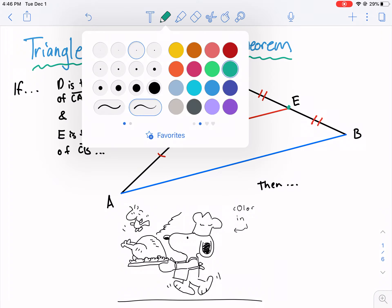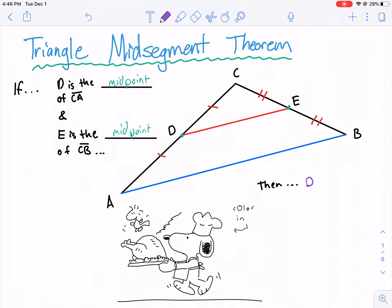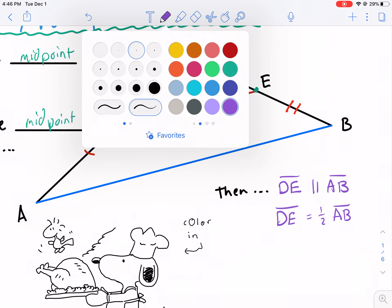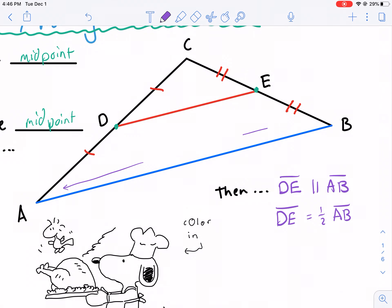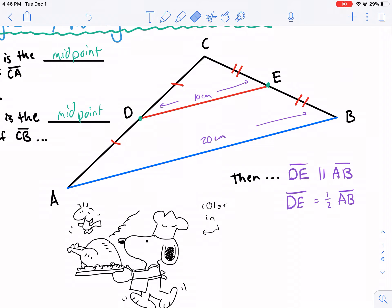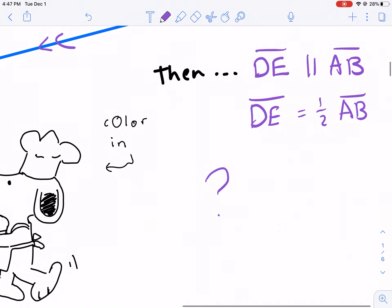Then we know that by appearances, one thing you might be able to surmise is that DE is parallel to AB. But also, we can say that DE equals one half times AB. So what do we mean by that? Well, we mean that if this segment AB were, let's say, 20 centimeters long, then that would make DE 10 centimeters long. So why is that the case? Why is it that these two segments are parallel, and that we know that these are half the size of each other?